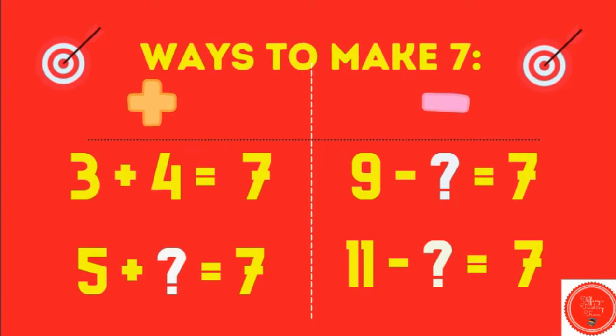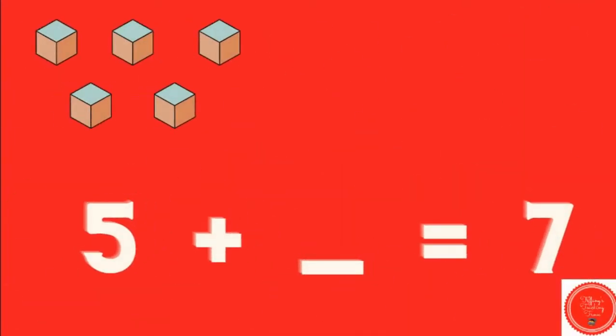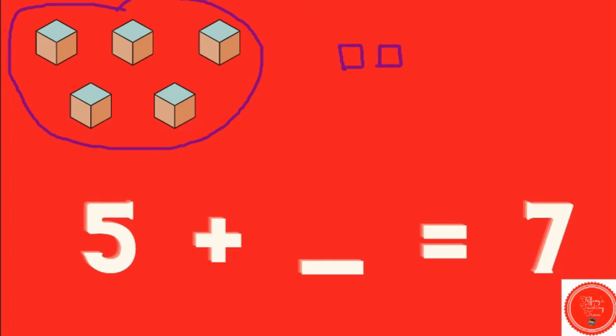Let's look at our next addition problem. Five plus what number equals seven? So here we have five. Let's count on until we get to seven: six, seven. We had to add two. Five plus two equals seven.